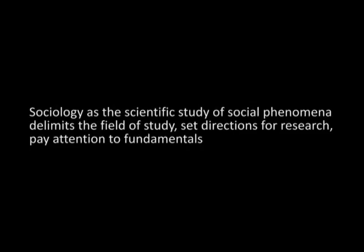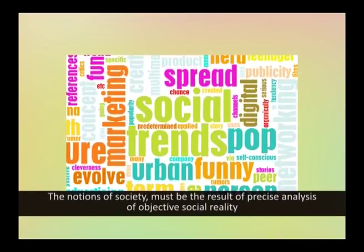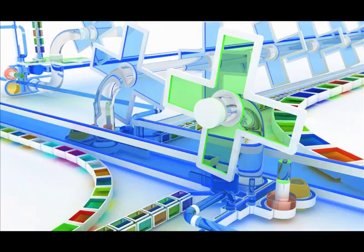Sociology as the scientific study of social phenomena delimits the field of study, sets directions for research, and pays attention to fundamentals. Sociology is defined as the scientific study of the formation, organization, and transformation of human society. It is scientific because notions of society must result from precise analysis of objective social reality as it is — not theoretical elaboration of what we would like it to be. The scientific attitude sees social structure as a changing reality, not as a definitive, unique, and perfect social organization. Hypotheses and theories derived from observation are tested against reality to be replaced or confirmed.